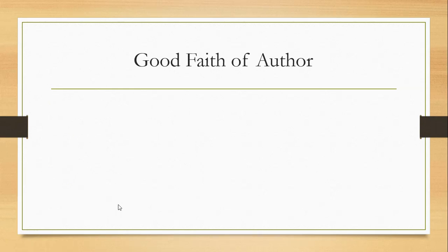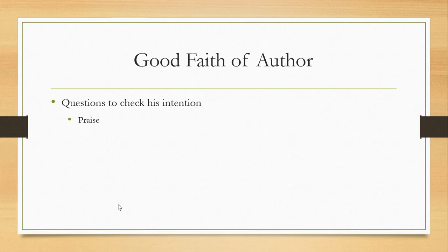First, we check the good faith of the author — how honest the author is. We ask questions to check whether the author's intention was honorable or not. The first question is whether the author wanted praise. A classic example: if you are a court historian writing about a king who lost a battle, you might write that he won, or omit the battle entirely, because you want the king to praise you, give you promotions, or money.